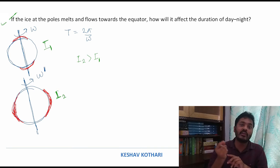In the second case, the mass is at a distance from the axis of rotation, so the contribution of mr² will increase. As a result, the moment of inertia in the second case is more.